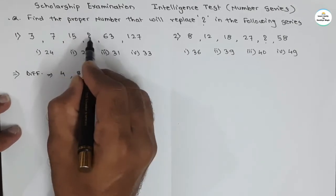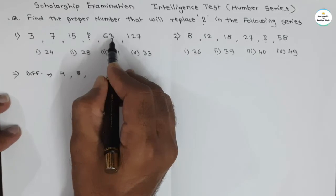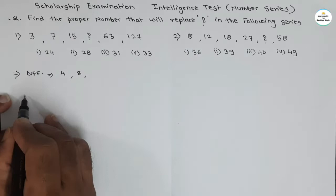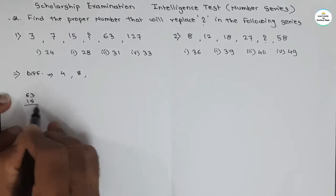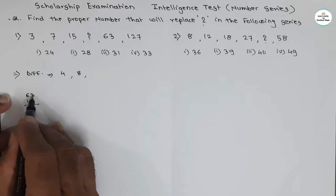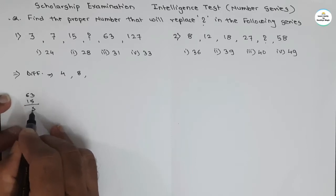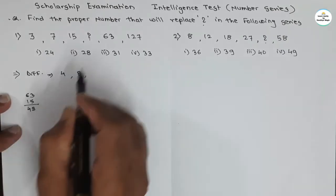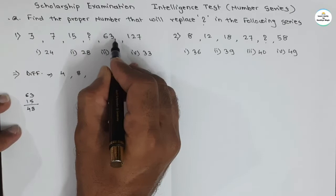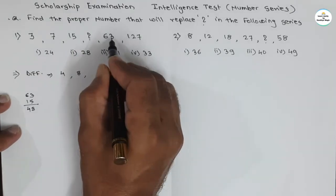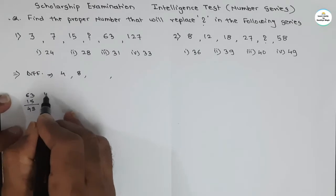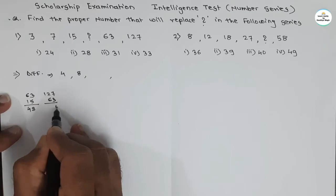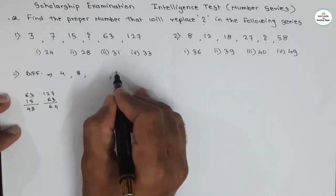Then, from 15 to the question mark, and from the question mark to 63. If we find the total difference — 63 minus 15 — that is 48. So the difference from 15 to 63 spans one more number in between. And 63 to 127: 127 minus 63 gives us 64. So the difference here is 64.